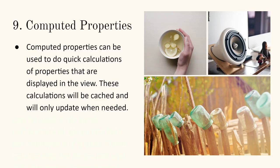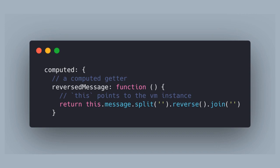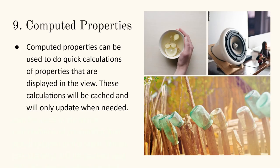Tip eight: computed properties. This is something you don't always have in other frameworks — Angular doesn't have computed properties. Computed properties can be used to do quick calculations of properties displayed in the view. These calculations are cached and only updated when needed. So if you have a computed property attached to your template, it's not going to run a million times in the background — it runs once and is cached unless it changes. For example, you can split, reverse, and join a string and put it right into your template.